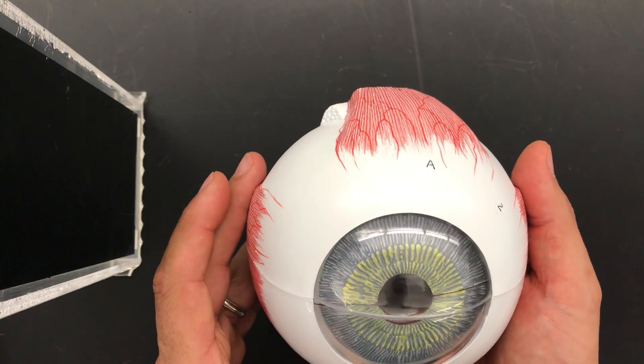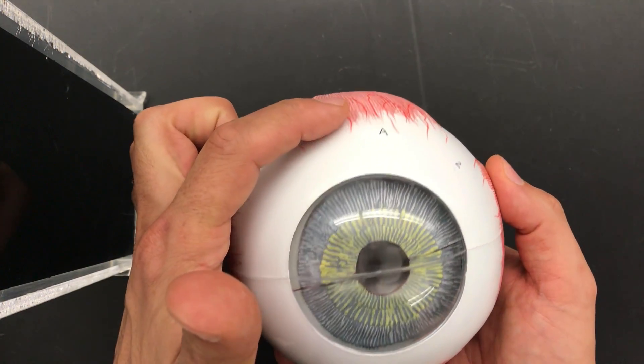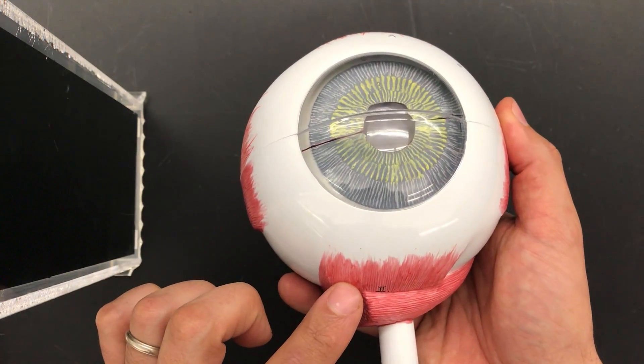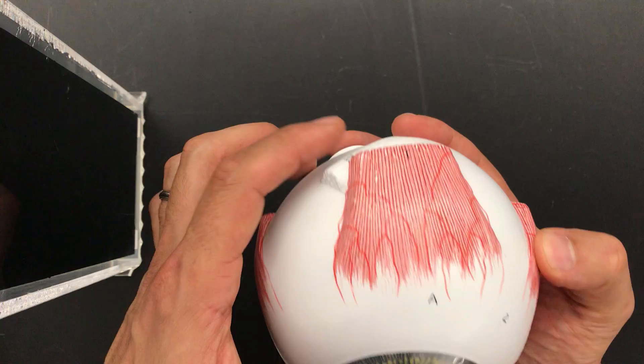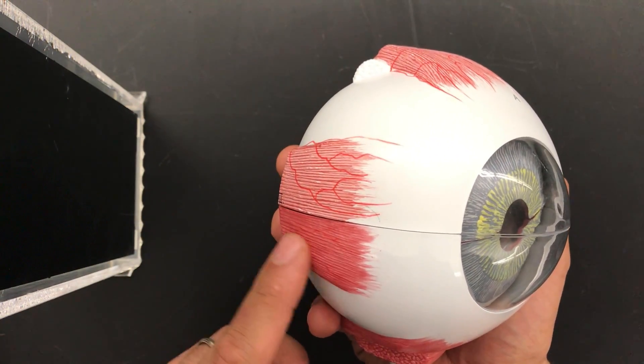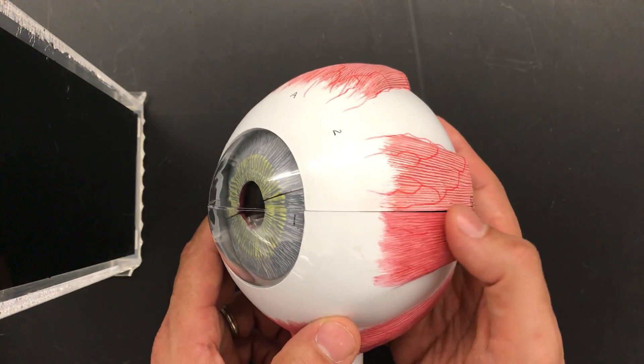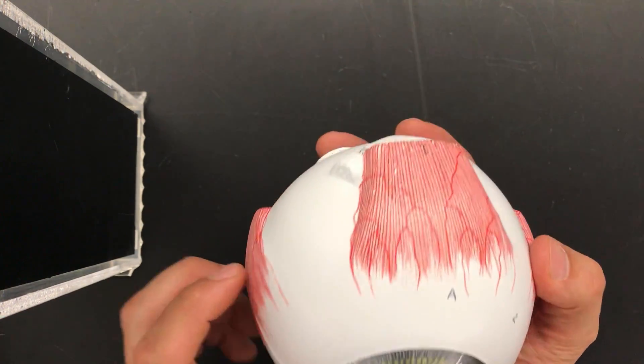There are four more muscles here: your superior rectus, inferior rectus, and because we know the obliques point medially, we automatically know this is your medial rectus and your lateral rectus.